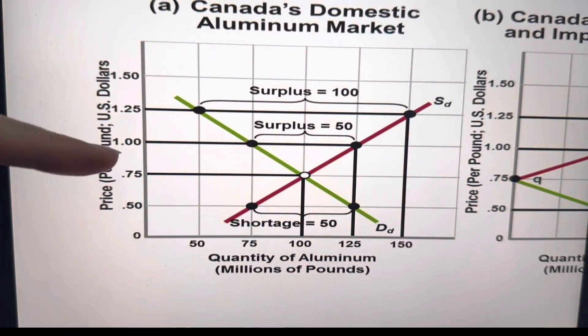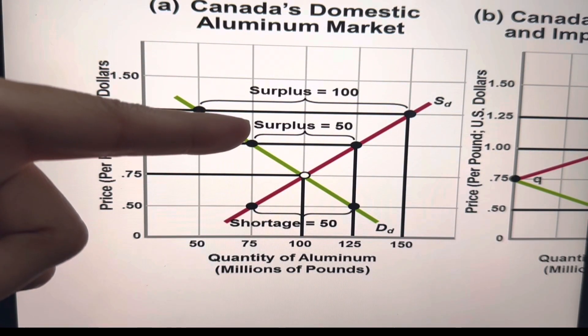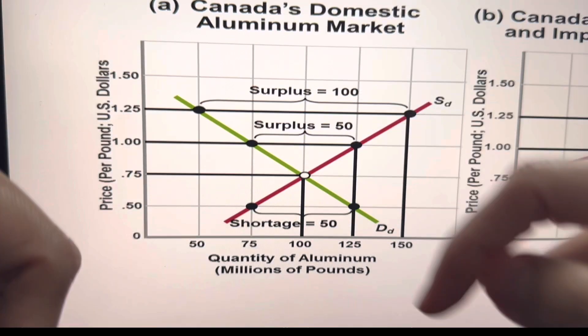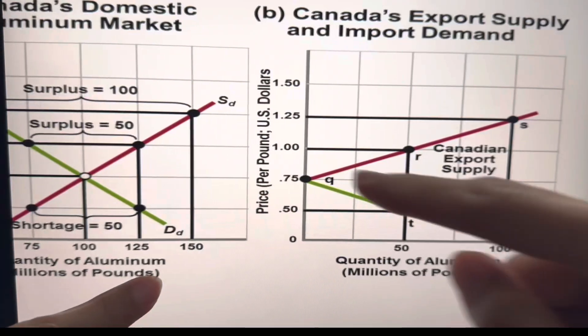Any prices higher than the equilibrium price, there's a surplus. So every time there's a surplus, the country can export.